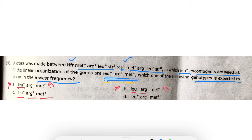Option C: leucine, arginine, and methionine are all transferred together — this is very rare because transferring all chromosomal genes takes a long time, and during that time the conjugation tube breaks, causing interrupted mating. So option C is indeed rare. Option D shows leucine transferred, then arginine is not transferred, and directly after leucine, methionine is transferred — skipping arginine. Is this possible?